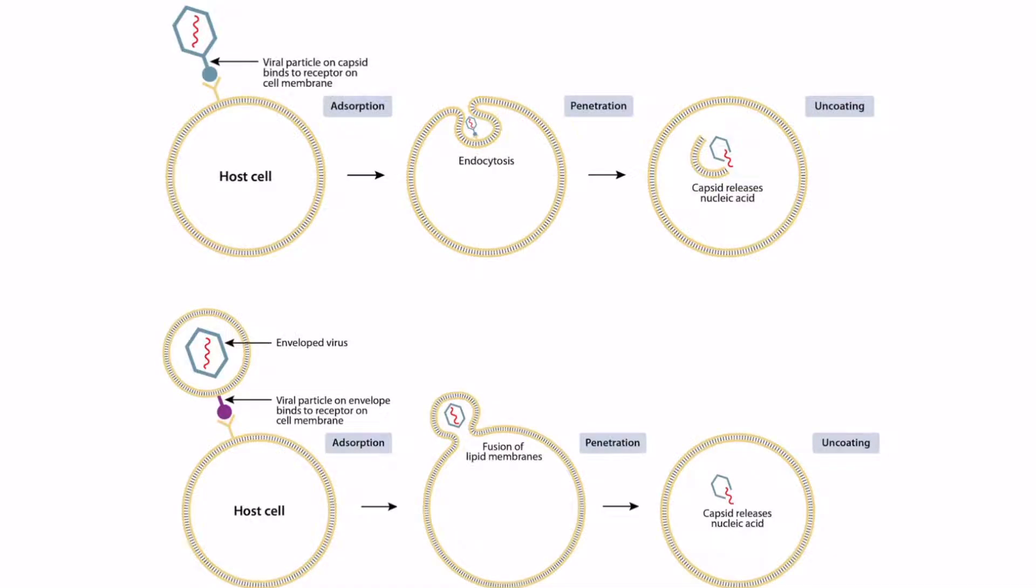Now, here are two images describing viral entry into host cells. The top image demonstrates how naked viruses enter cells, and the bottom image demonstrates how enveloped viruses enter cells. Let's start with the naked viruses. First, a viral particle on the capsid attaches to the cell membrane. This is called adsorption. Next, the host cell will bring the naked virus in through endocytosis. And this is called penetration. And lastly, the capsid will release the nucleic acid. This is called uncoating.